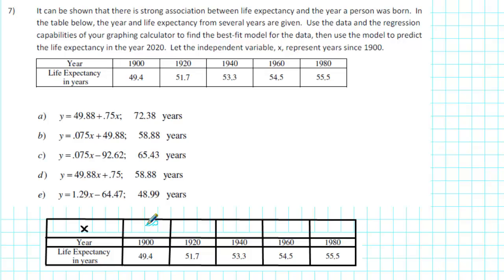1900 is 0 years since 1900. 1920 is 20 years since 1900. 1940 is 40 years since 1900. 1960 is 60 years since 1900. And 1980 is 80 years since 1900.